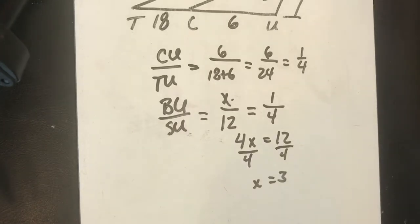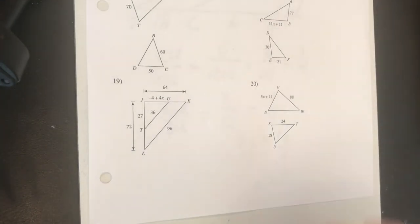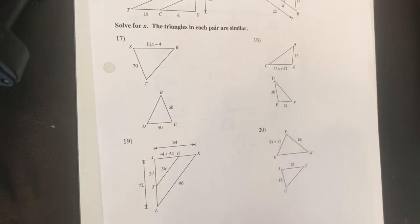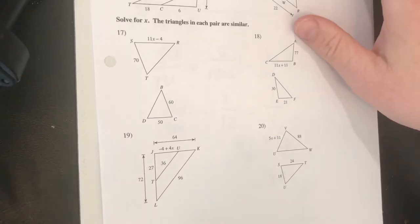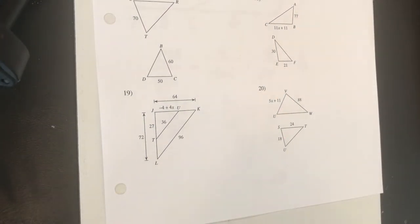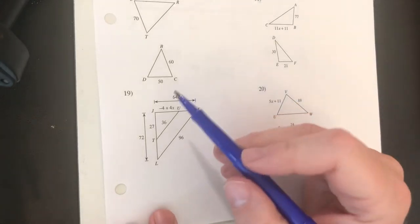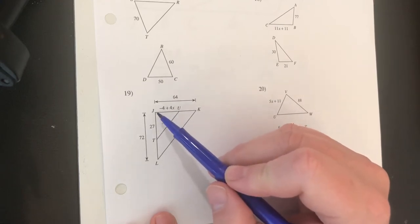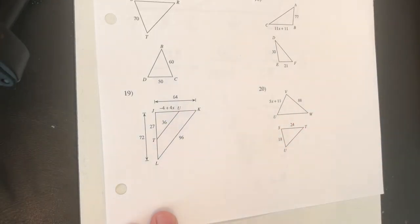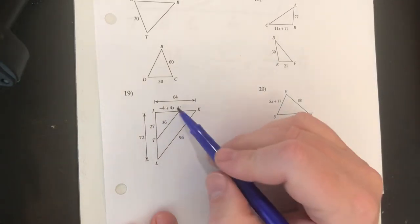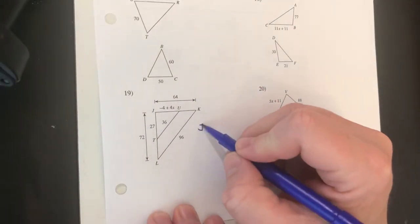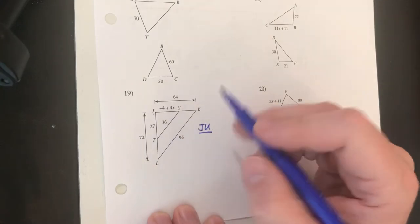Okay I've got one more example I want to work through. We just want to solve this for x and we're told that the triangles are in fact similar. We're going to look at number 19, it's a little more complicated than the others so we'll just take a look at it. So I know that these triangles are similar, in other words triangle JUT is similar to triangle JKL and I want to find the value for x. Well x is contained in the length of JU.